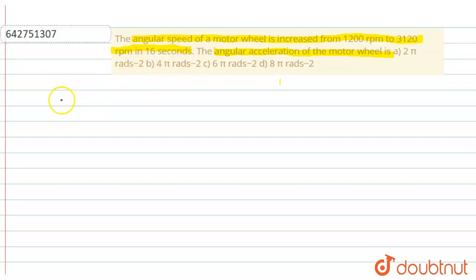And there is a final, which is represented by omega, that is 3120 rpm. And time is given, that is 16 seconds. So t equals 16 seconds.